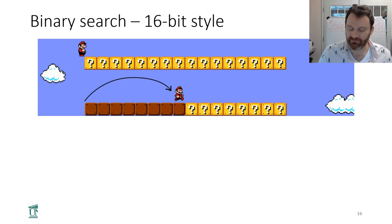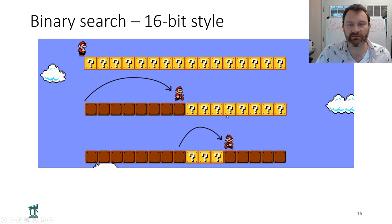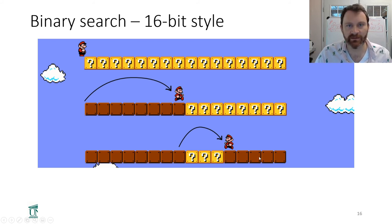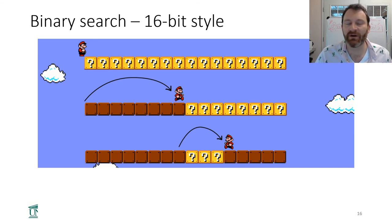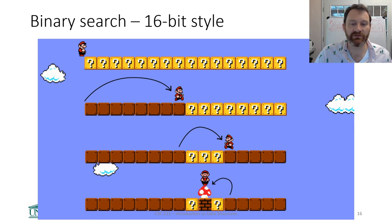His goal is to eliminate as many possible locations as he can at one time to reduce the number of blocks he has to search through. When he jumps again, he jumps to the middle of the right-hand side. By jumping he learns that approximately half of the remaining blocks don't have the mushroom. So the first time he learned it couldn't be in the left half, then he learned it couldn't be in the next half, and so he keeps narrowing it down.